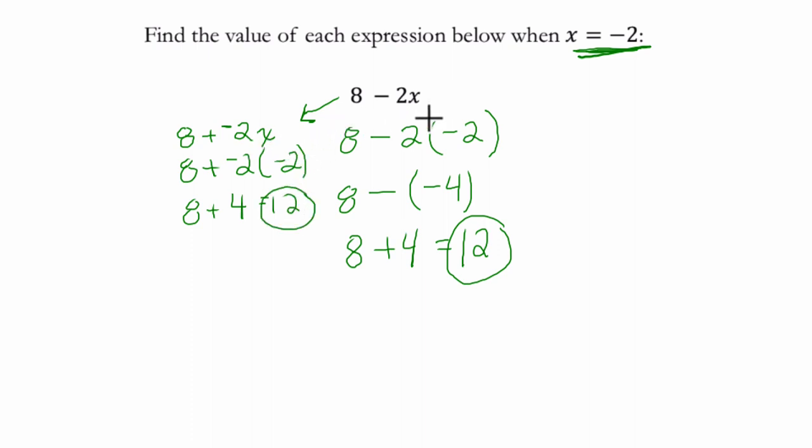So two ways to think about it. In the first one, you can think of subtracting, well, here you're multiplying 2 by negative 2, and you're subtracting that product. You're subtracting negative 4.